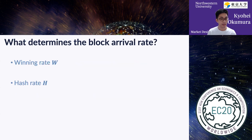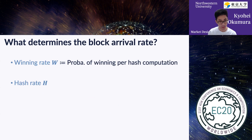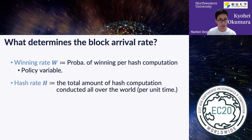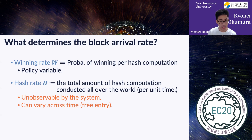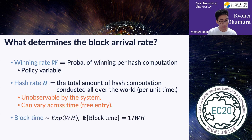There are two key factors that determine the block arrival rate. The first factor is winning rate — the probability of winning per hash computation — and this is a policy variable, meaning the system can freely choose its value. The other key factor is hash rate, the total amount of hash computation conducted all over the world. The point is that this is unobservable and can vary across time, because in the Bitcoin system everyone can become a miner whenever they want. The block time approximately follows an exponential distribution with intensity W·H, and its expectation is 1/(W·H).